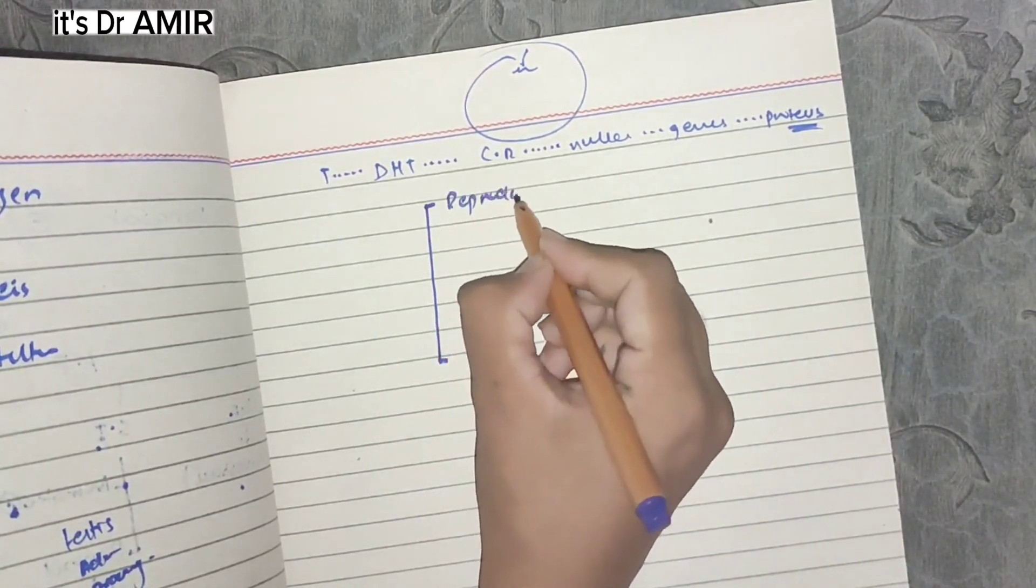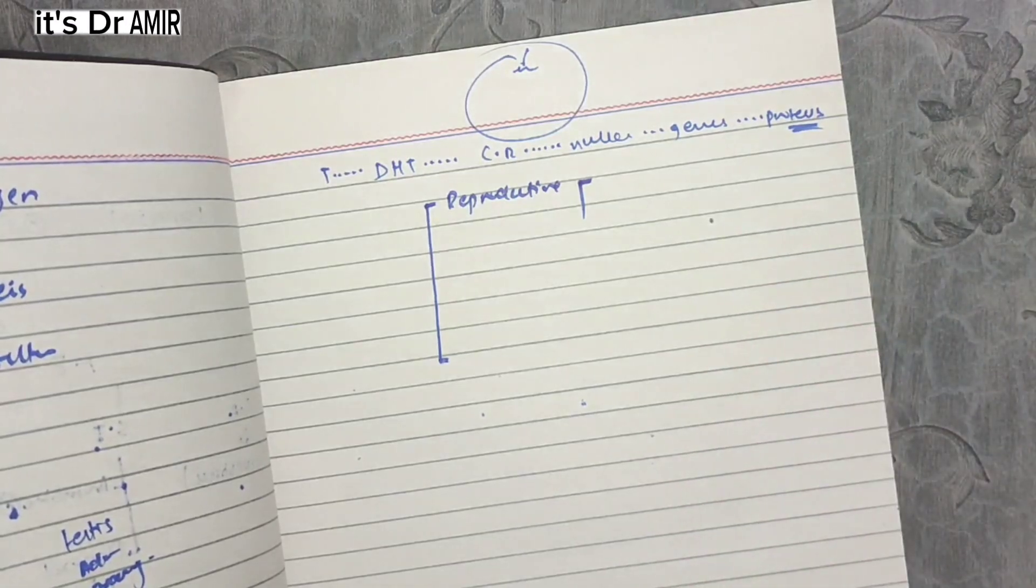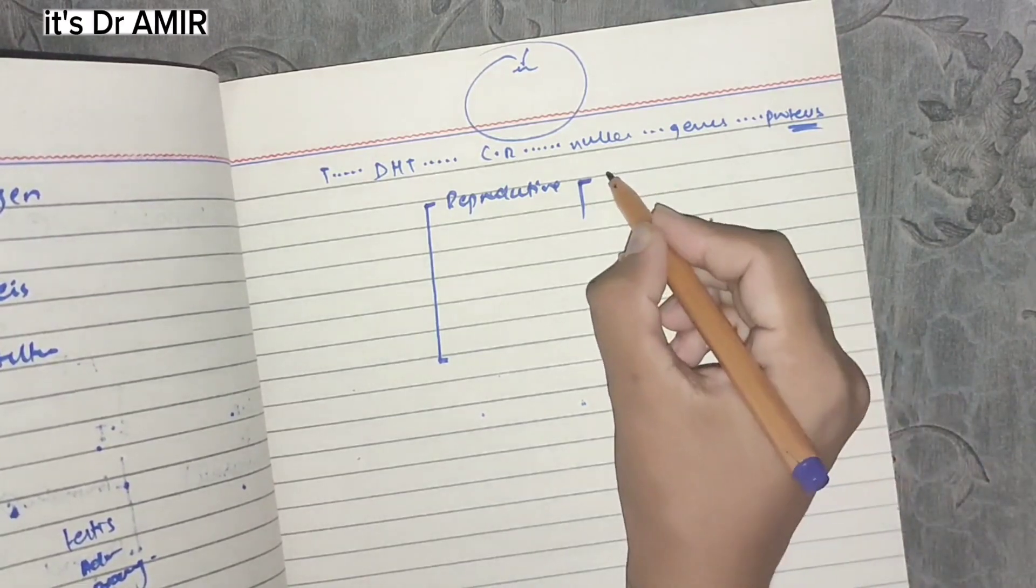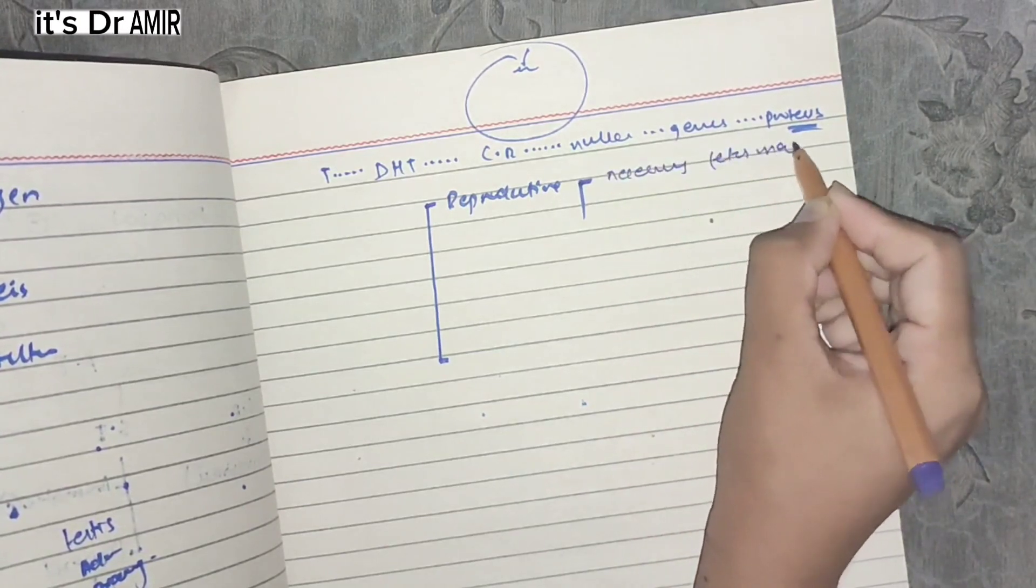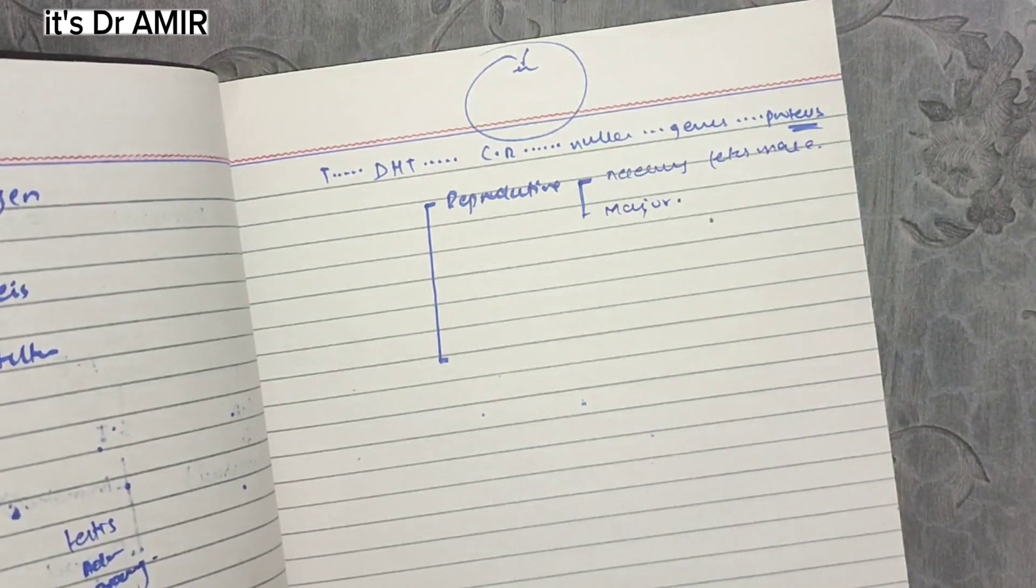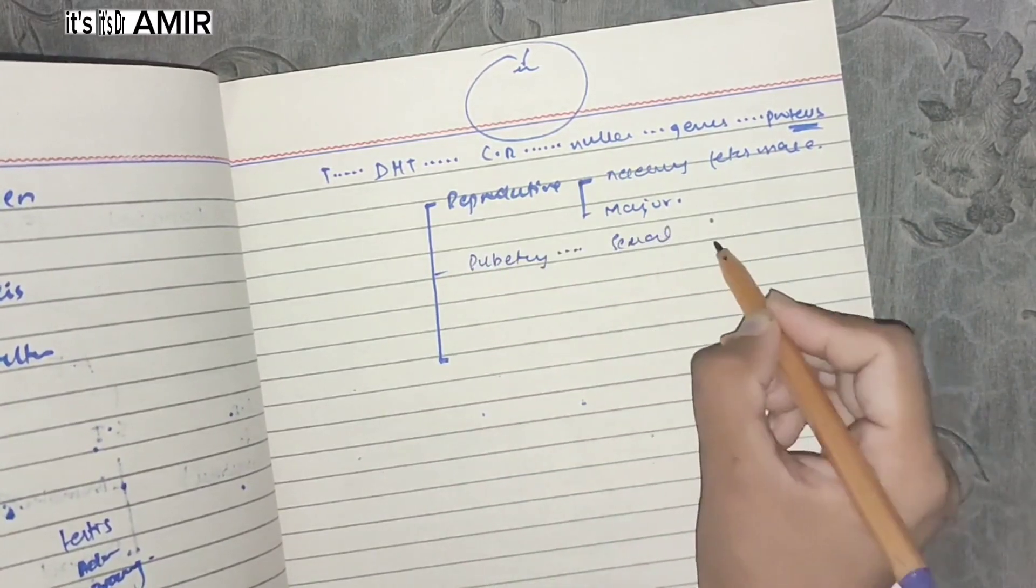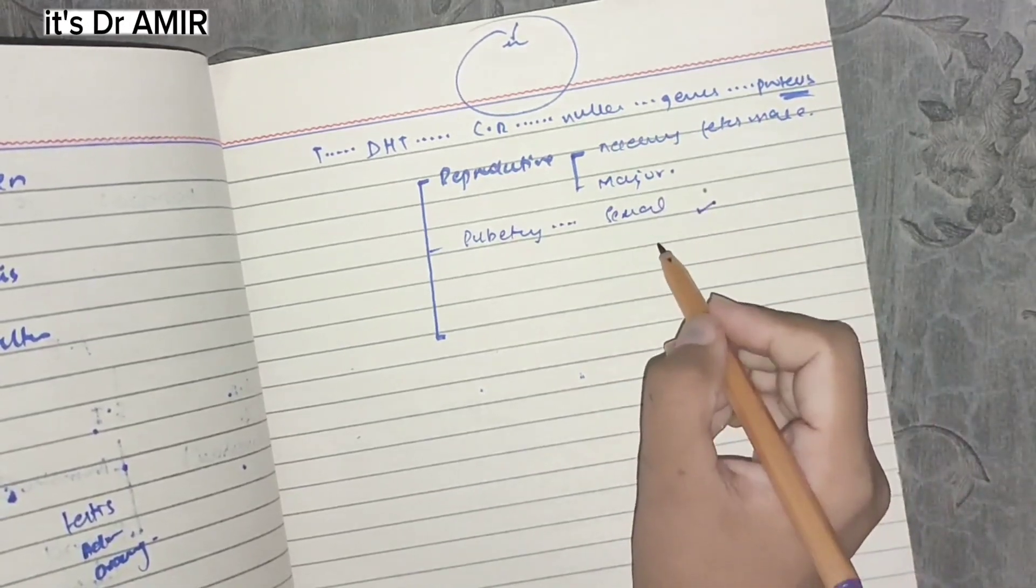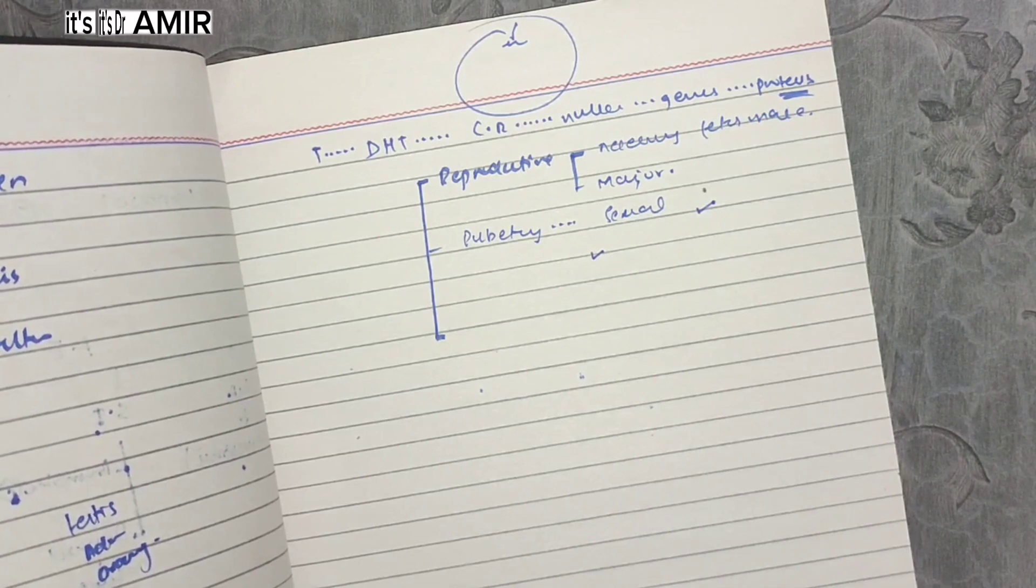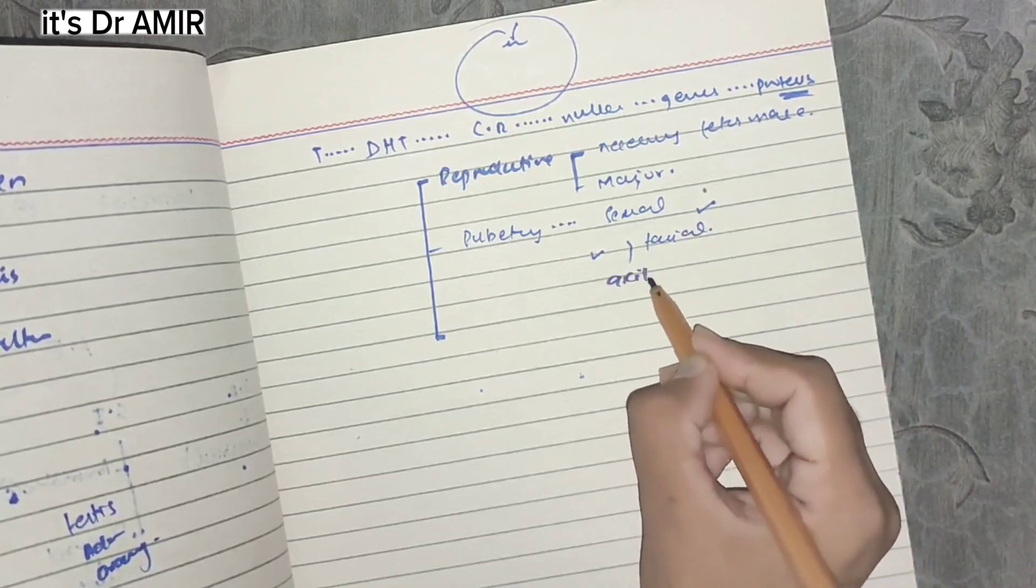If we talk about reproductive function, testosterone is very important for male development. When it becomes a male fetus, it is important for testes development and guiding the developmental process towards male fetus. Second, this is the major hormone which guides male puberty. If there is a deficiency, the male is not able to reach puberty. Major puberty functions include enlargement of sexual organs like penis size, affects the larynx and deepens voice, facial characteristics alter after puberty.